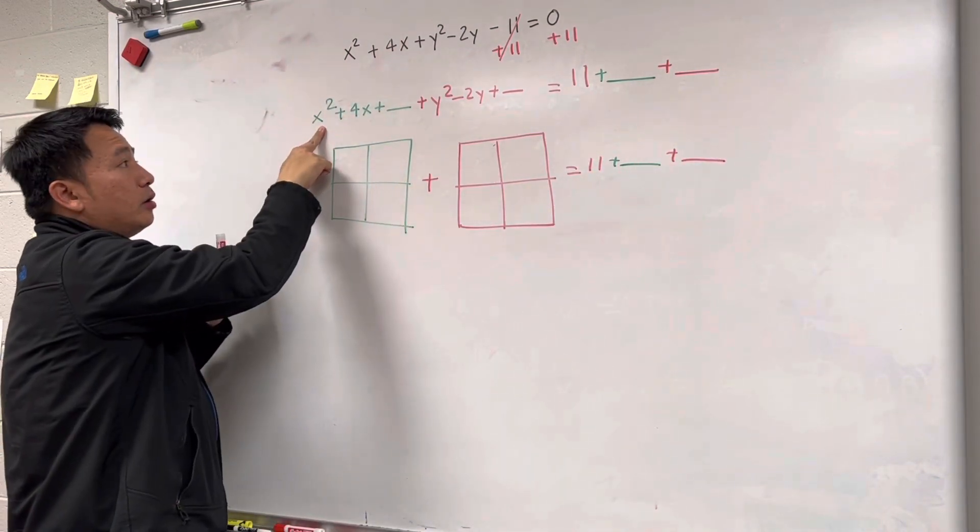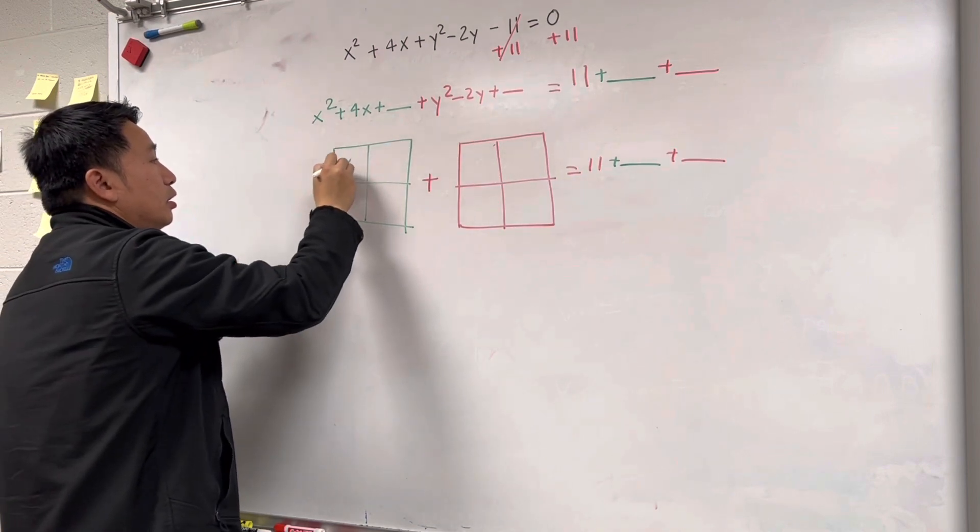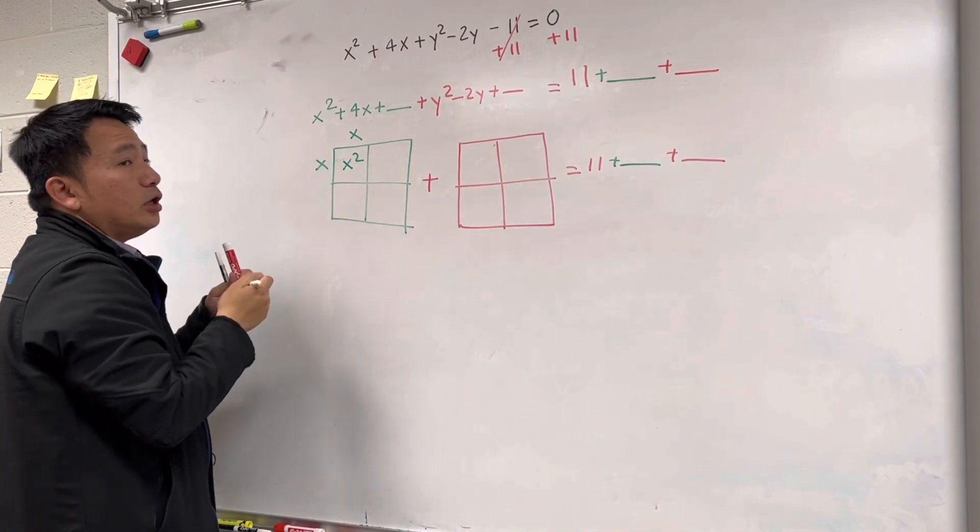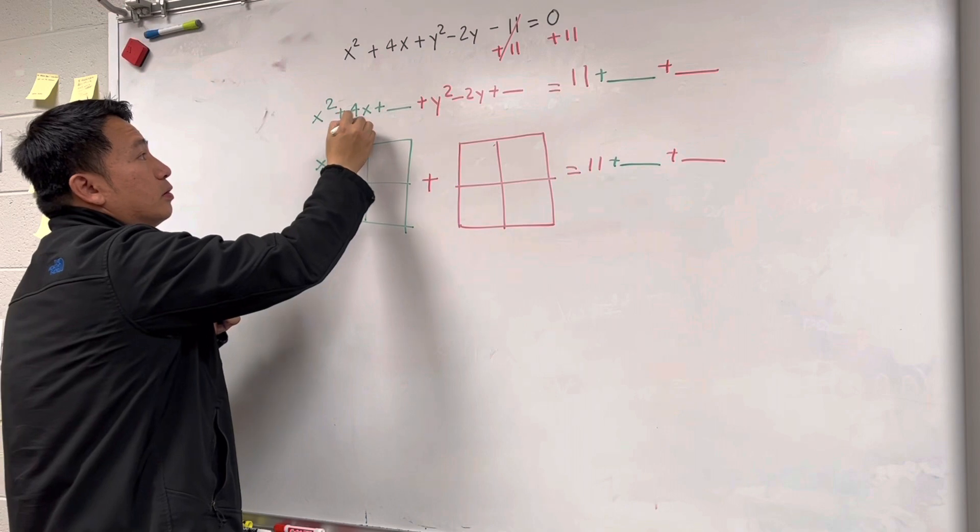So you see x squared? x squared right here, okay? x squared. And you know x times x is x squared, right? Can you think of two numbers exactly the same? When they add, they give you 4, right?